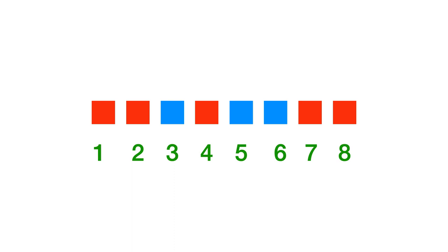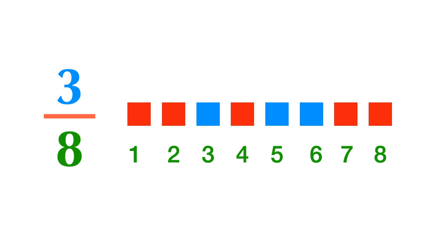Here we have 8 squares as a whole with 3 blue squares and 5 red squares. We can say 3 out of 8 squares are blue squares. We can say 5 out of 8 squares are red squares. 5 eighths of the squares are red squares.